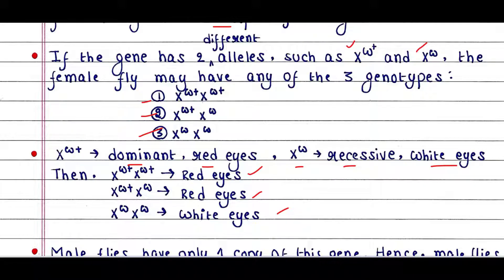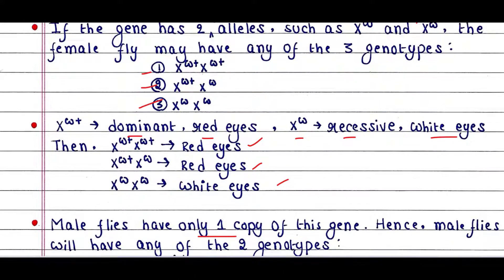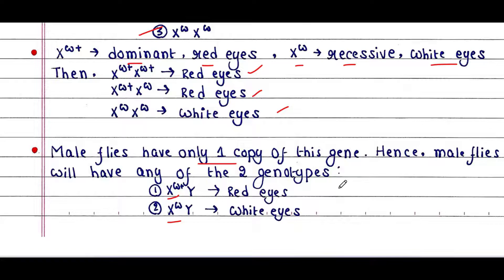Male flies have only one copy of this gene, so male flies will have one of two genotypes: Xw+Y or XwY. The genotype Xw+Y will show the phenotype red eyes, and the genotype XwY will show the phenotype white eyes.